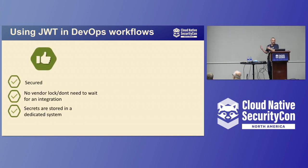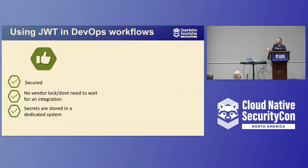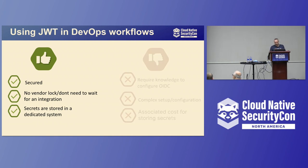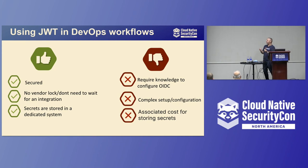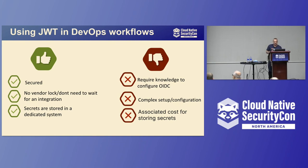If you use JWT in a DevOps workflow, the benefits are: first, it's far more secure because you're using an ID token — even if it gets leaked it has an expiration time of five minutes. Second, there's no vendor lock — you don't need to wait for anyone to build an integration; you can use the tools you have today. And lastly, secrets are stored in a dedicated system so you get all the features surrounding secret management. The downsides are: you need to know how to configure OpenID Connect on your providers; the setup is a bit complex, though you only need to do it once; someone needs to maintain it — even at GitLab only a handful of engineers know how to do it. And lastly there is an associated cost when storing secrets in a secret management provider, whereas storing as an environment variable doesn't cost anything.